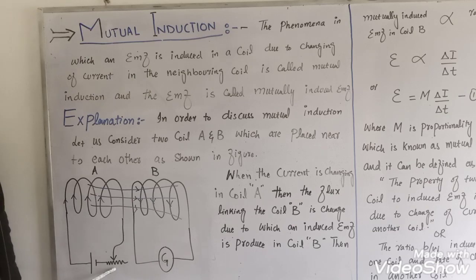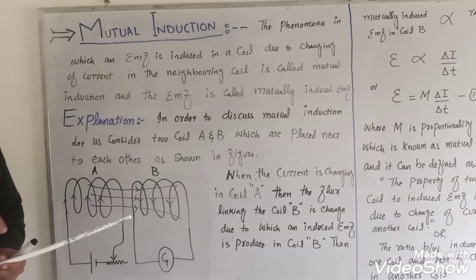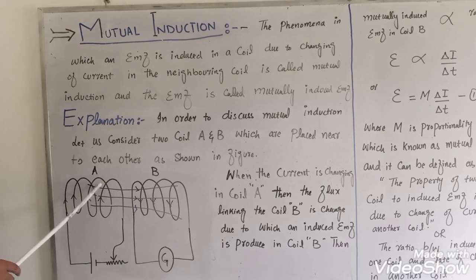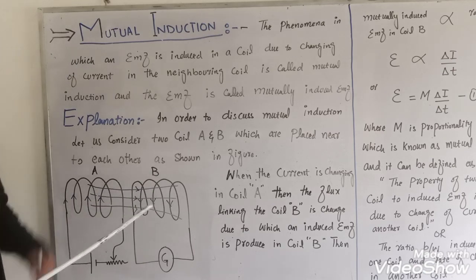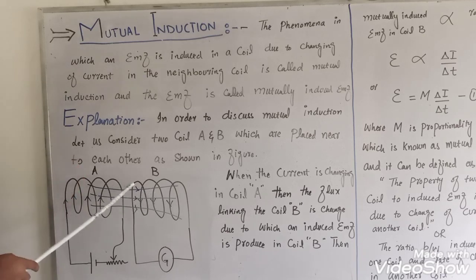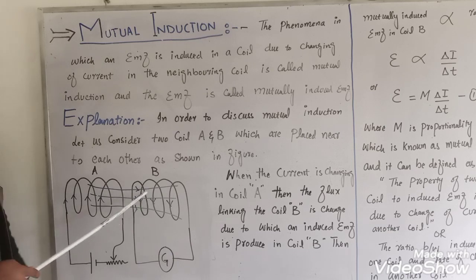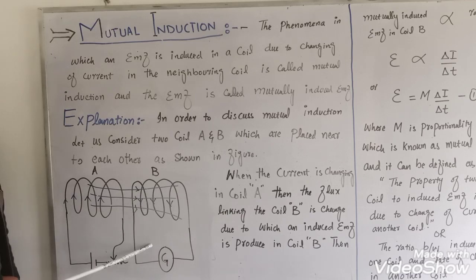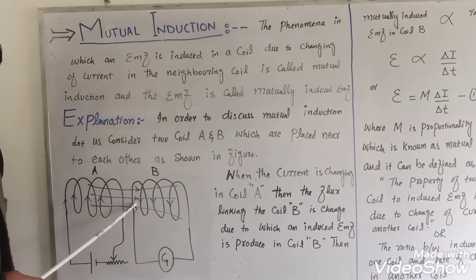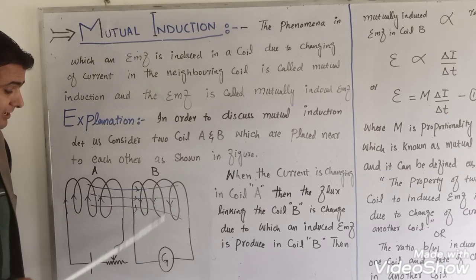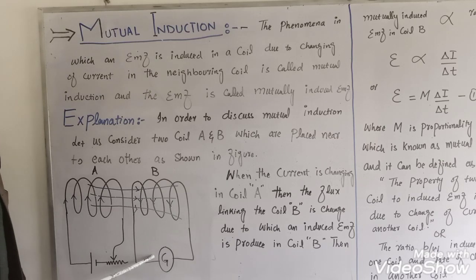Coil A is connected to a battery and a rheostat. The rheostat is used to vary the current. When we increase or decrease the current, the magnetic field produced by coil A also changes. This changing magnetic field passes through neighboring coil B, causing the flux linking coil B to continuously fluctuate. According to Faraday's law, this induces an EMF in coil B, which we observe as a deflection in the galvanometer.